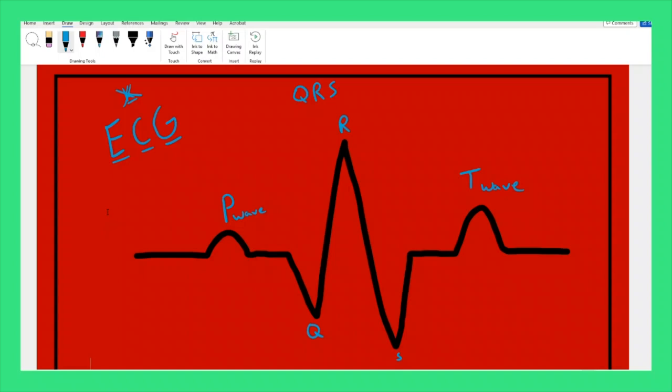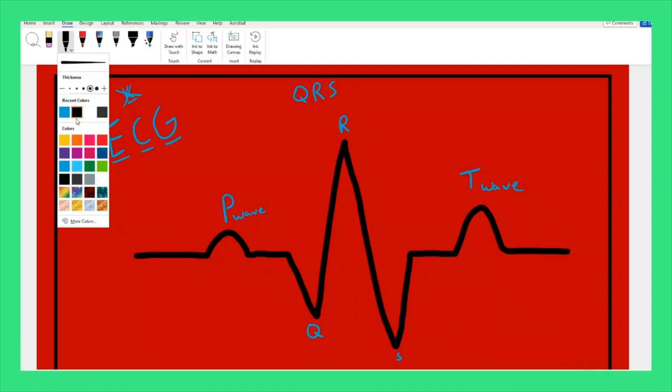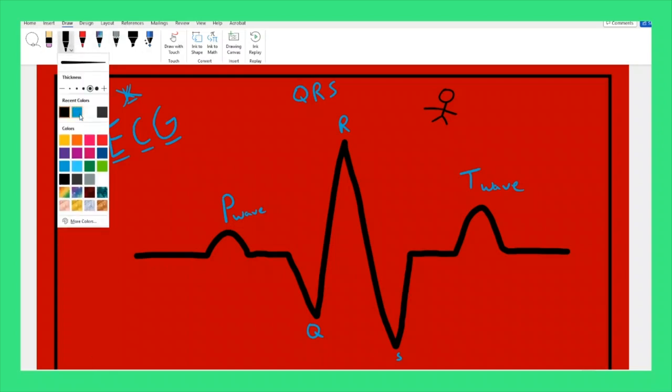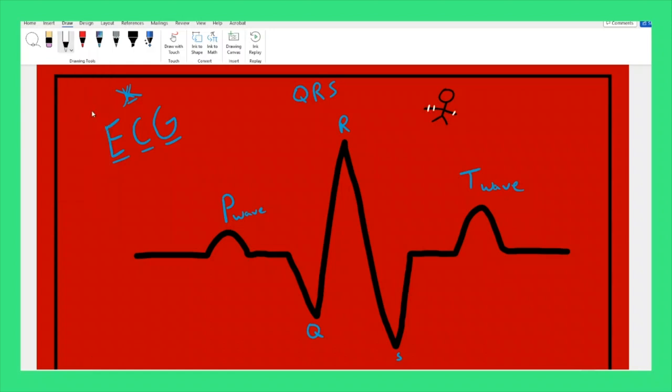And each one of these represents something. But you've seen these done, right? On someone. Maybe you've had it done on yourself. I've had a lot of ECGs over the years. We stick electrical leads on a person.